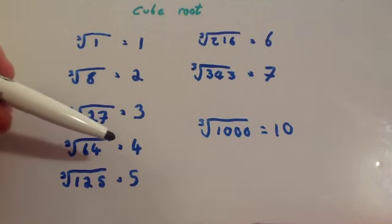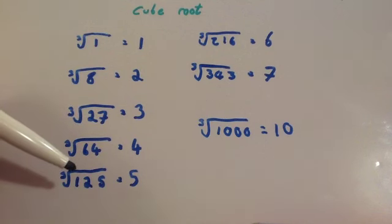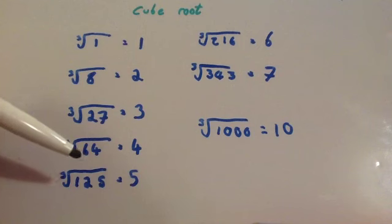The cube root of 64 is 4 - 4 times 4 times 4 is 64. The cube root of 125 is 5, because 5 times 5 times 5 is 125.